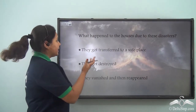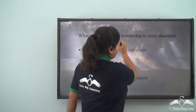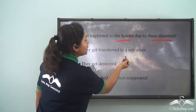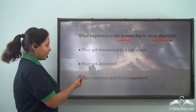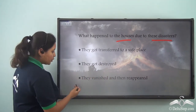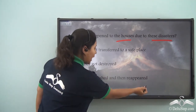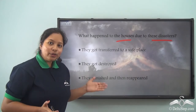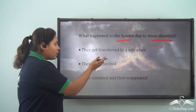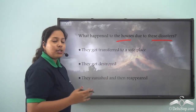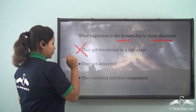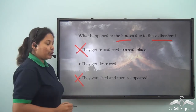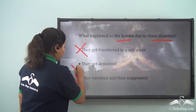Now here we have a question: What happened to the houses due to this disaster? Option A — they got transferred to a safe place; Option B — they got destroyed; or Option C — they vanished and then reappeared? Well, we saw in all of these natural disasters that the houses did not get transferred to a safe place, and neither did they vanish and reappear. So the correct answer is — they got destroyed.